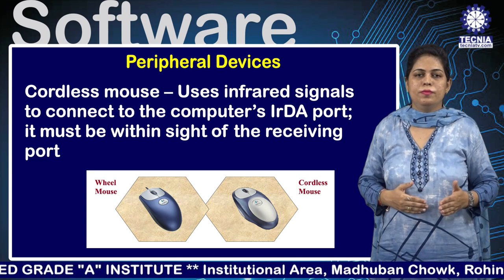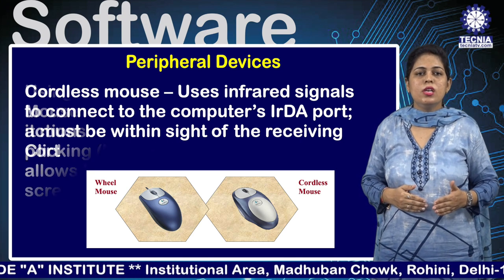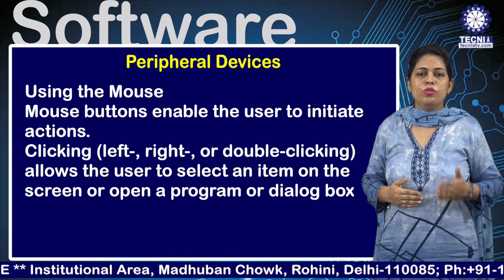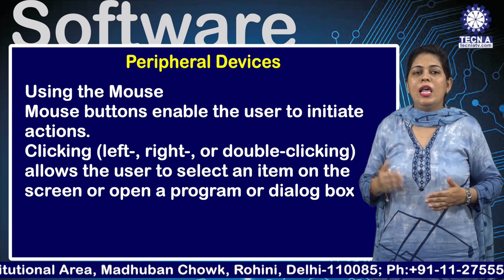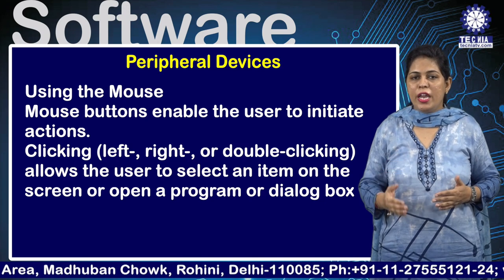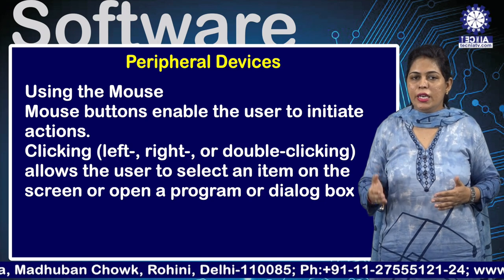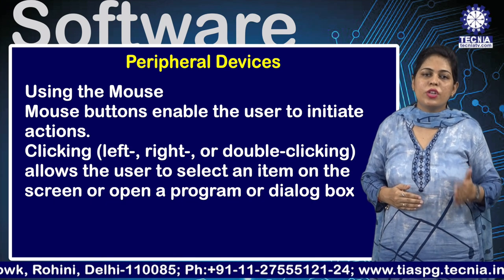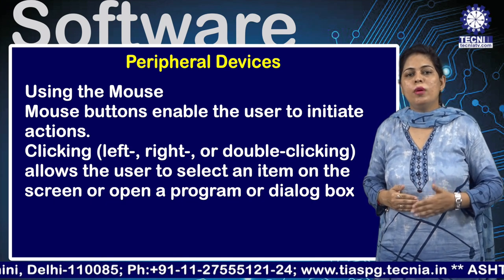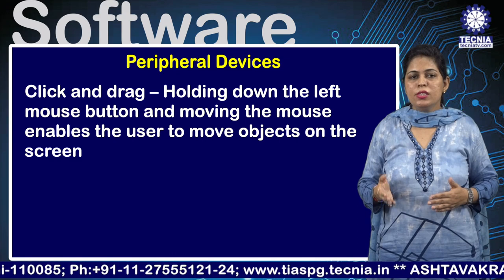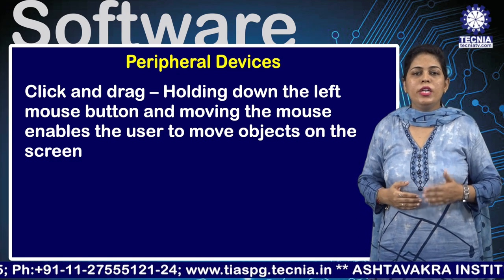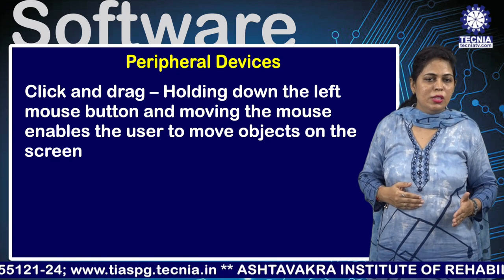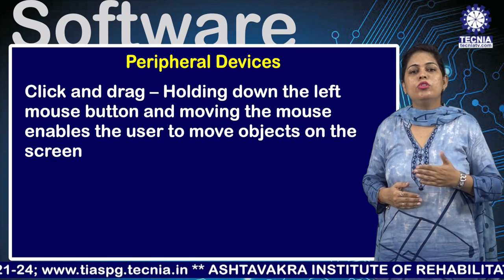Mouse buttons enable the user to initiate actions like clicking left, right, or double-clicking, allowing the user to select an item, open a program, or open a dialog box. Click and drag — holding down the left mouse button and moving the mouse — enables the user to move objects on the screen.